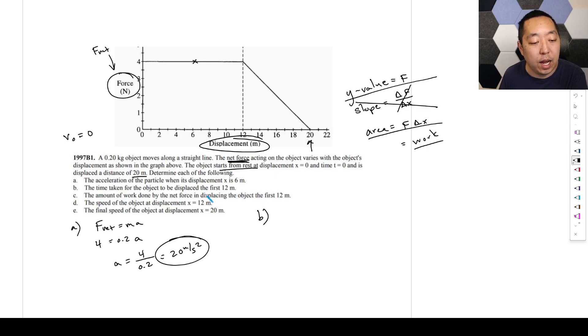Part b: the time taken for the object to displace the first 12 meters. Work has nothing to do with time. We have displacement and time. The only thing I know that involves time at this point is our kinematic process, and that only applies when the acceleration is constant. Is the acceleration constant? Because the force is constant over the 12 meters, yes, the acceleration is constant. So we're allowed to use our kinematic equation process. Always got to double check that. Don't just say I'm going to use kinematic equations. Remember, it requires the acceleration to be constant.